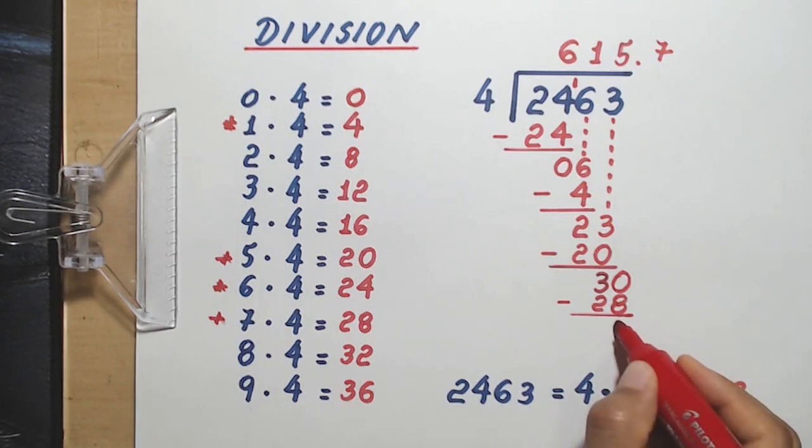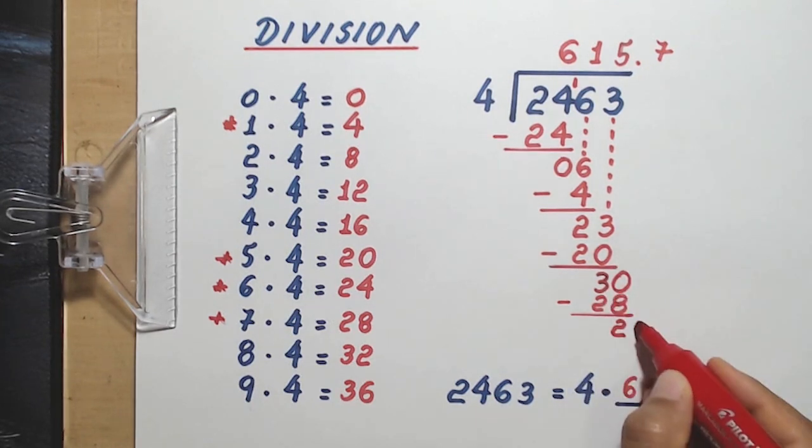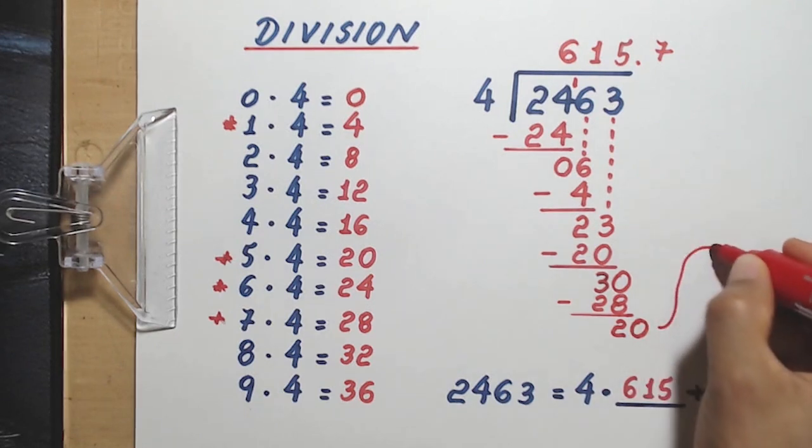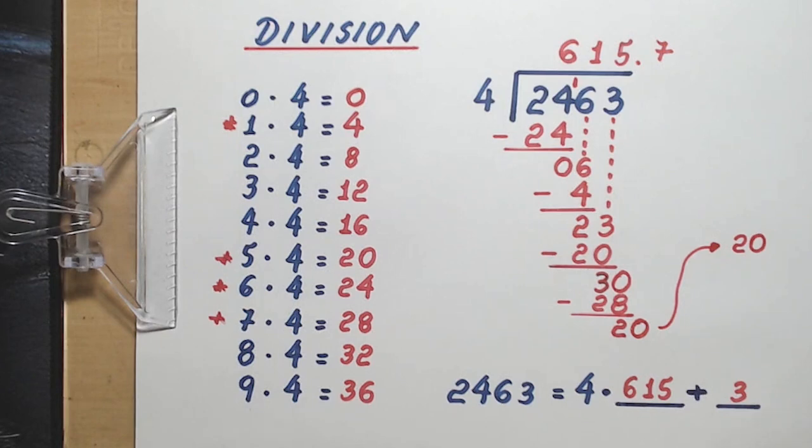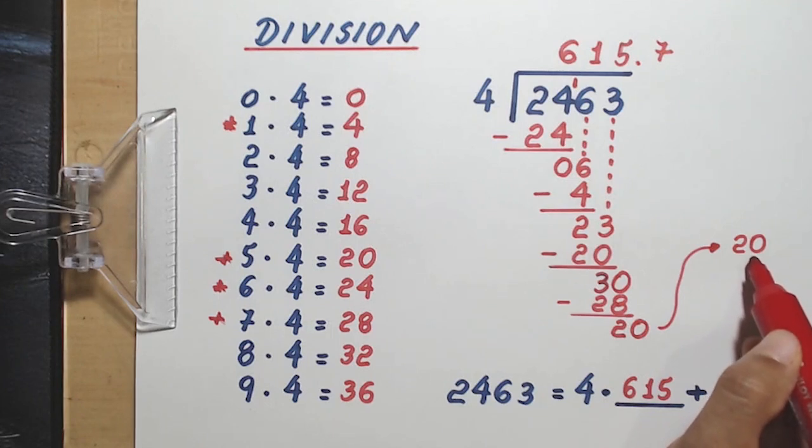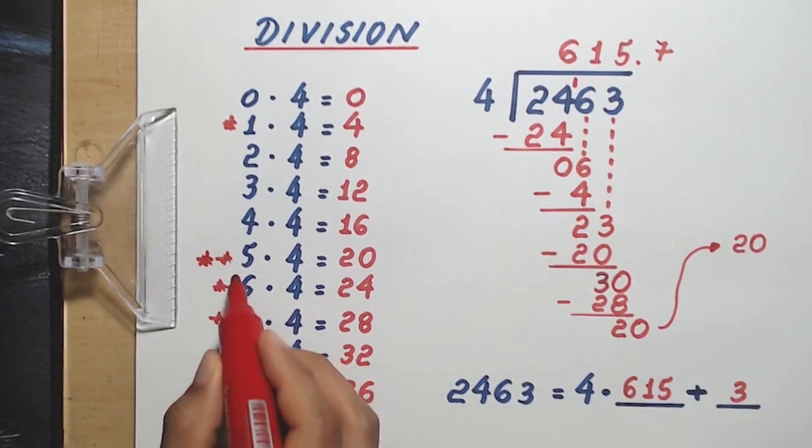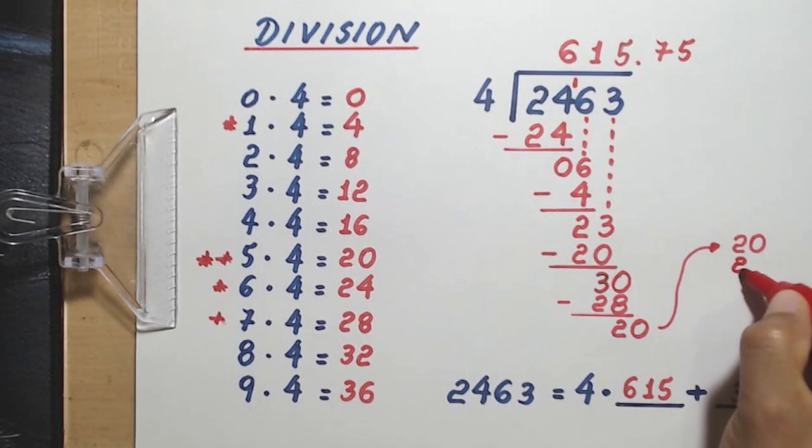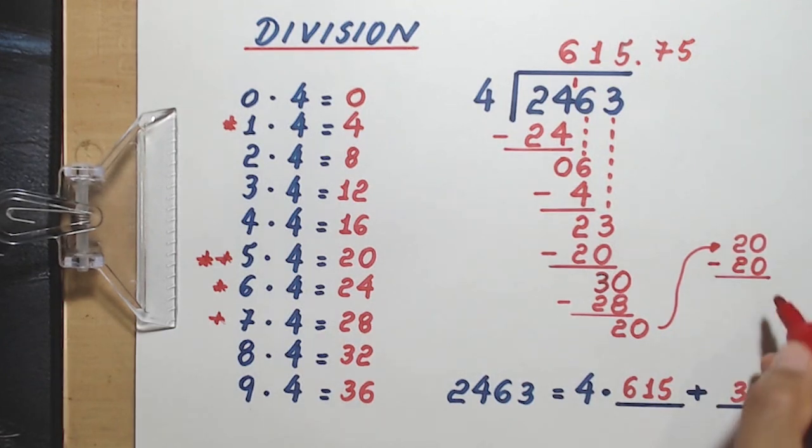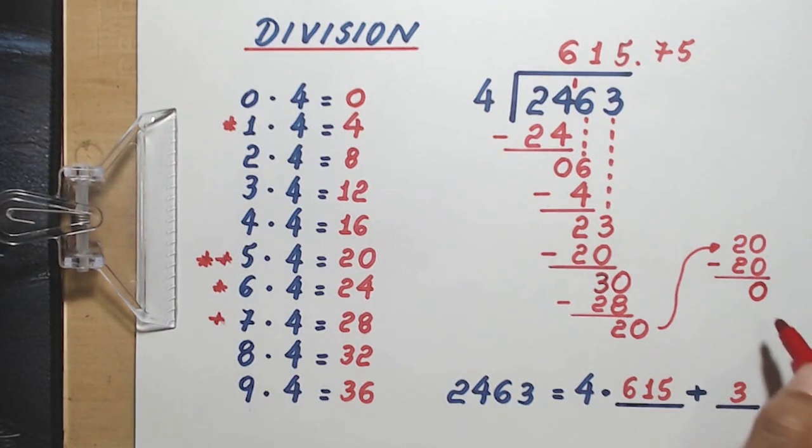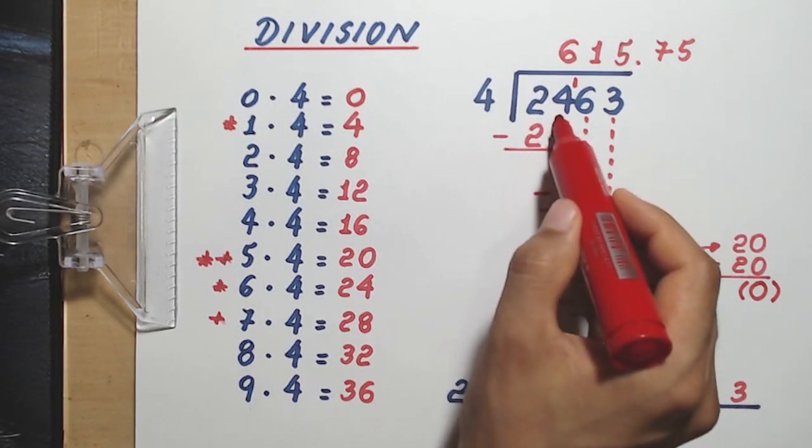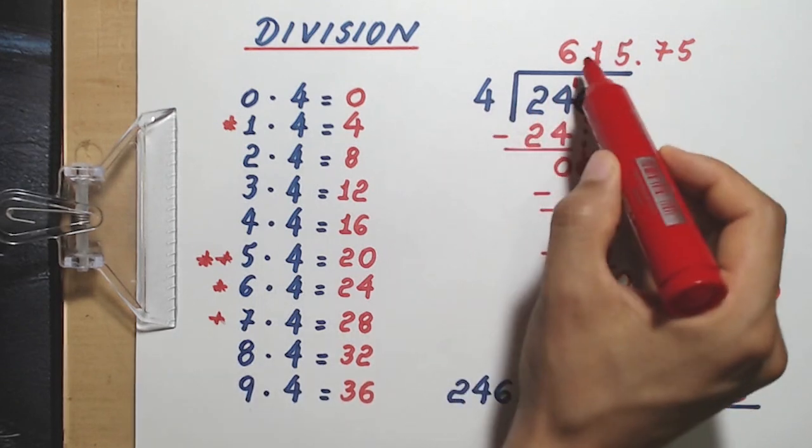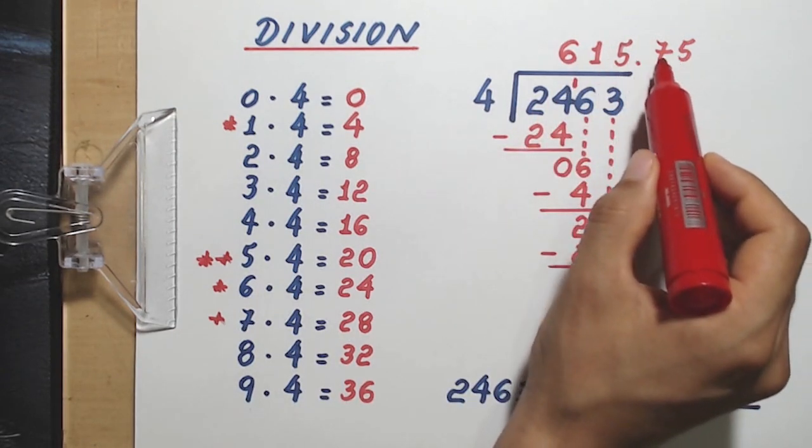30 minus 28 is 2. Since there is no digit to bring down, I bring down 0. Now we have 20 here. We ask the question, what number do I multiply by 4 to get 20, or almost 20, but not more than 20? The number is 5. 5 times 4 is exactly 20. I write it here, and we subtract. 20 minus 20 equals 0. So there is nothing left over. The exact quotient when dividing 2,463 by 4 is 615.75.